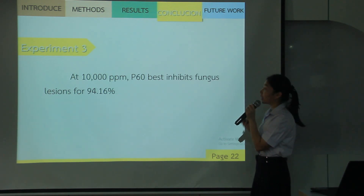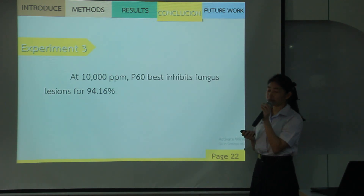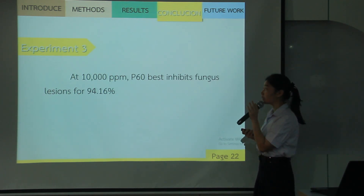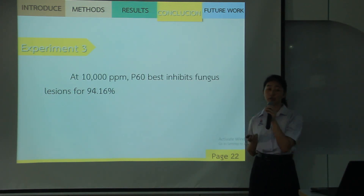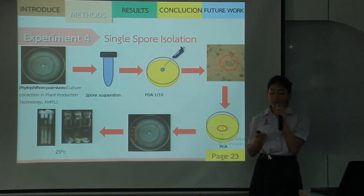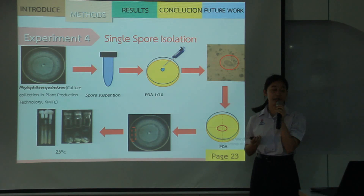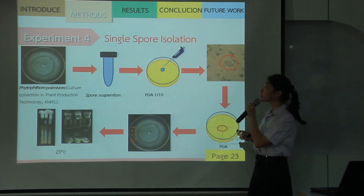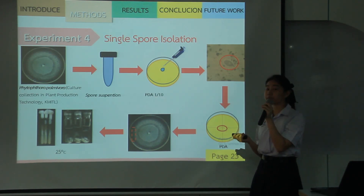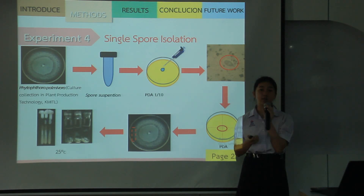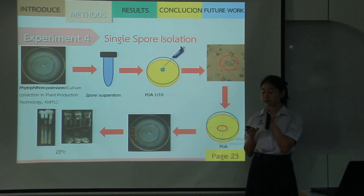Conclusion: at 10,000 ppm, P63 best inhibits fungal lesion development up to 94.16%. Next is Step 4: single fungal isolation of Phytophthora palmivora. This step is done similarly to the Colletotrichum capsicum isolation procedure.